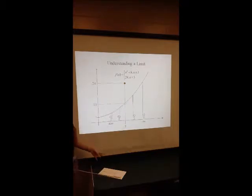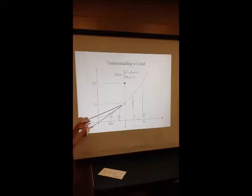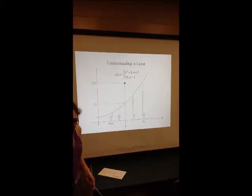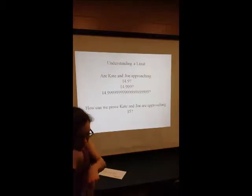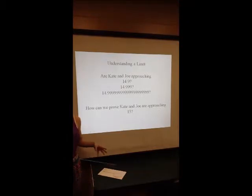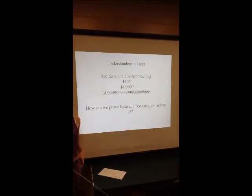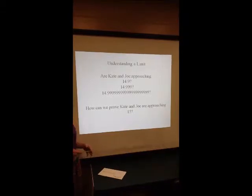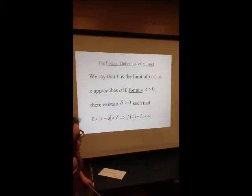But again, this does not matter to us, because we only care about what we predict the height of the ceiling to be at this point, not what the height actually is. But can we argue that Kate and Joe are approaching 14.9 feet, 14.999, 14.1 billion 9 feet? How do we prove that Kate and Joe are actually approaching 15 feet? To do this, we can use the formal definition of the limit.